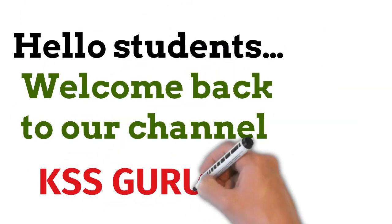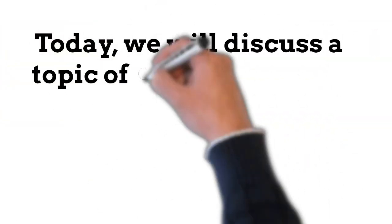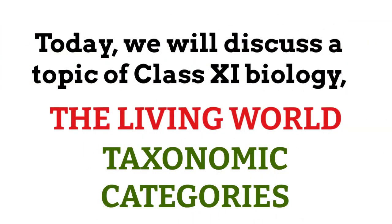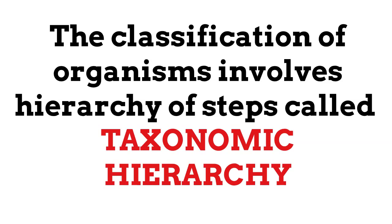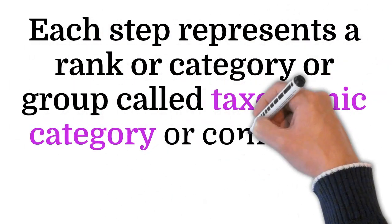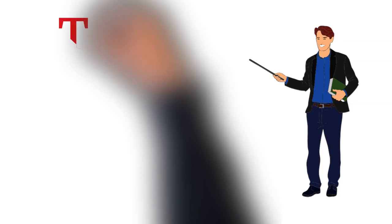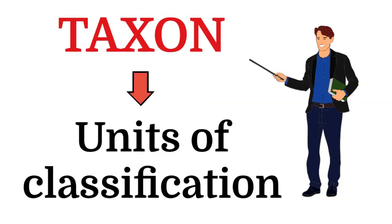Hello students, welcome back to our channel KSS Gurukul. Today we will discuss a topic of Class 11 Biology: taxonomic categories. The classification of organisms involves a hierarchy of steps called taxonomic hierarchy. Each step represents a rank or category or group called taxonomic category, or commonly taxon — in plural, taxa. Each taxon represents the units of classification.